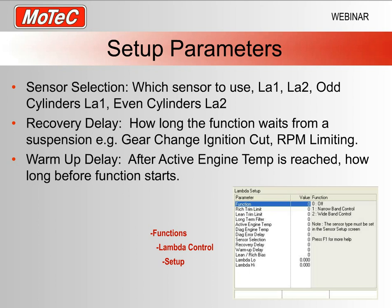The warm-up delay specifies how long to wait after the active engine temperature is reached before starting the function. Maybe you'll say wait 10 or 30 seconds. A good example: if you turn the car off and restart for your next round, the engine temperature may already be active, meaning lambda control wants to turn on — but the sensor will still be warming up. Lambda sensors can take up to about 20 seconds to come online when cool. So give it a bit of time — 10 to 20 seconds is probably a good starting point, but check your logging to see how long your sensor takes from starting a hot engine.